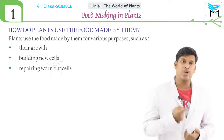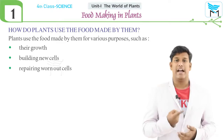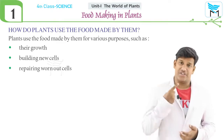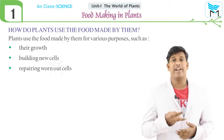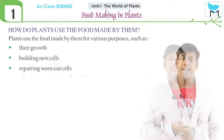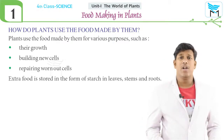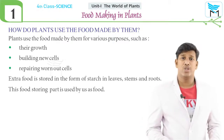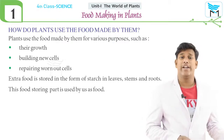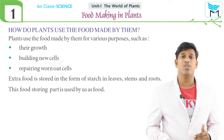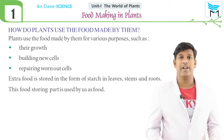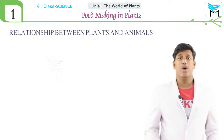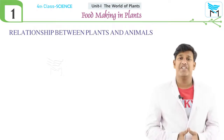Have you ever thought how plants use their prepared food? Plants use their food for their own growth, for reproduction, and for repairing worn-out cells. Extra food stored in the form of starch in all the tissues of the plant is used as food by humans.